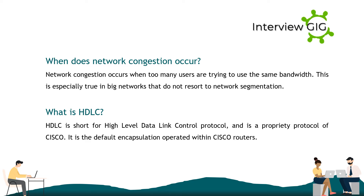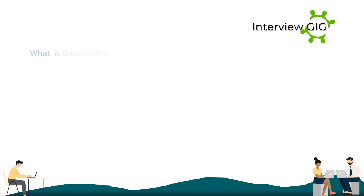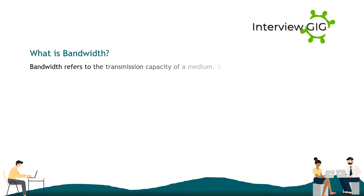What is HDLC? HDLC is short for High-Level Data Link Control protocol and is a proprietary protocol of Cisco. It is the default encapsulation operated within Cisco routers. What is bandwidth? Bandwidth refers to the transmission capacity of a medium. It is a measure of how much volume a transmission channel can handle and is measured in Kbps.